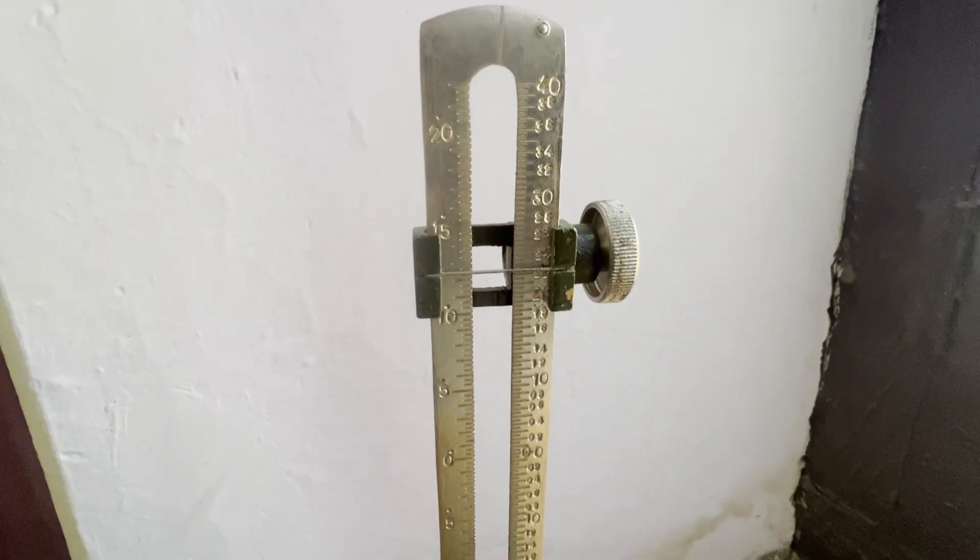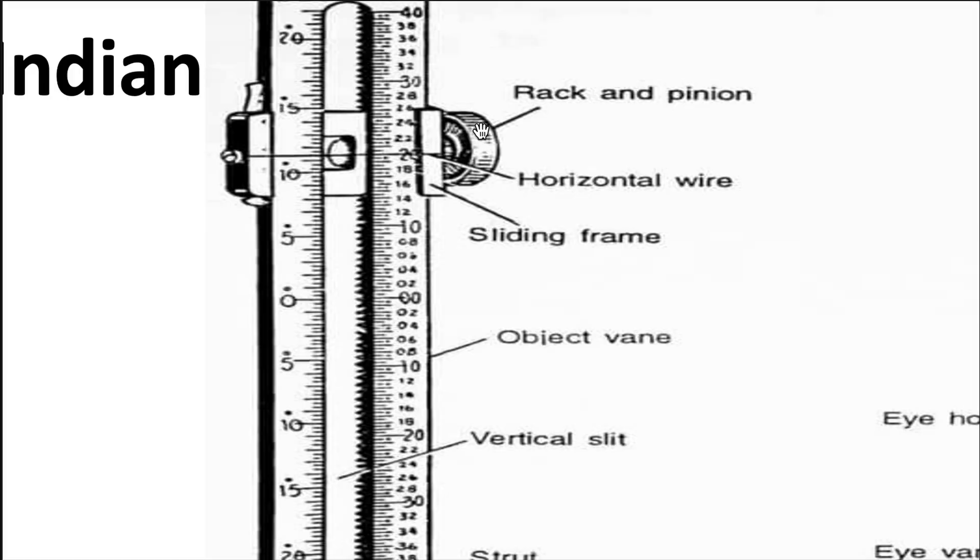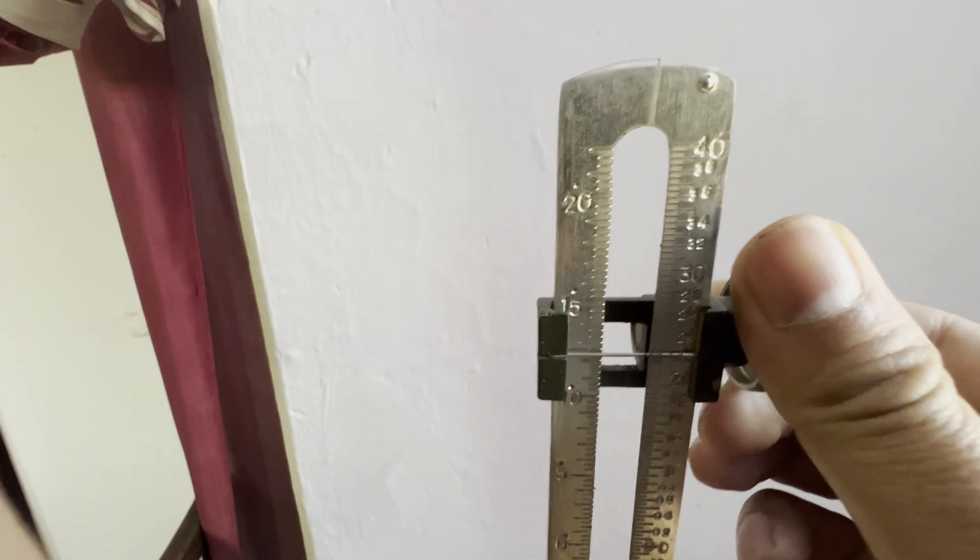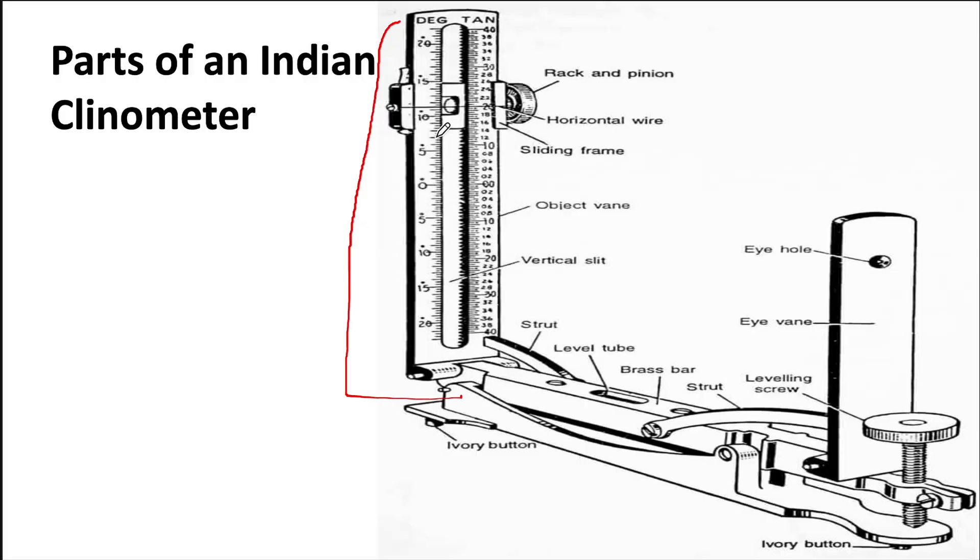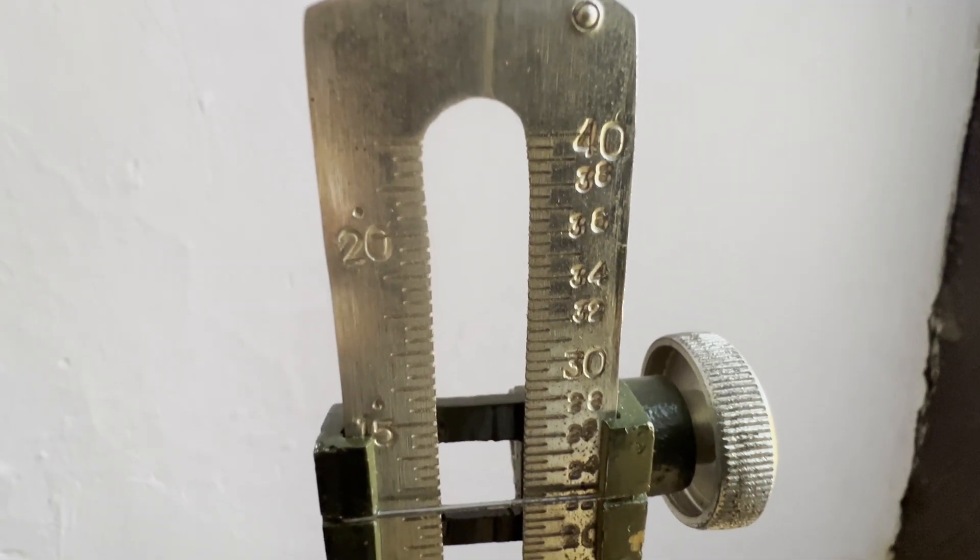The object vane has the following parts: a horizontal wire, markings in degrees on the left-hand side, and the equivalent tangent values marked on the right-hand side.